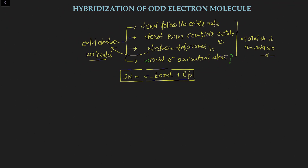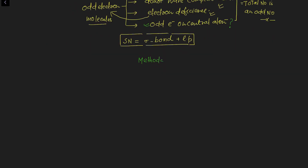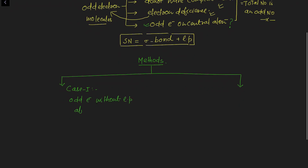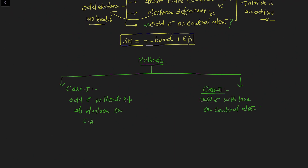Now, what are the methods for the determination of hybridization of odd electron molecules? For understanding this, there are two cases. Case number one: odd electron system or odd electron molecule without a lone pair of electrons on the central atom. Case number two: odd electron with a lone pair on the central atom.